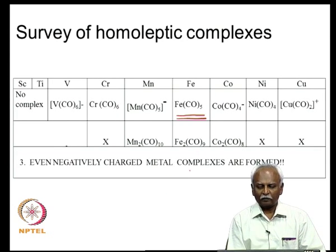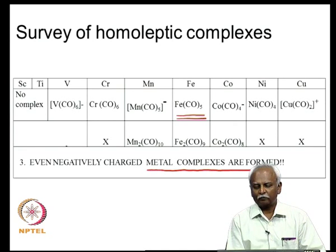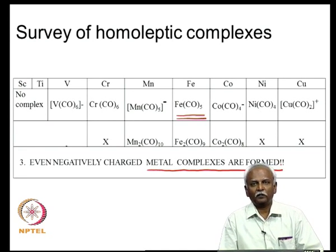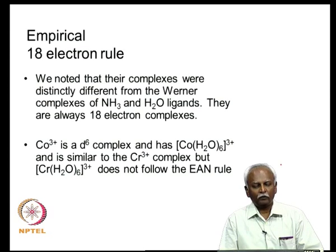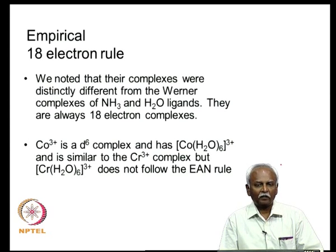Negatively charged metal complexes are formed in organometallic chemistry, which is very different from Werner's coordination chemistry where this is very rare. What we have noticed in this series of complexes is that all of them end up with a total of 18 electrons around the metal atom. This was the reason why people started talking about the 18-electron rule.